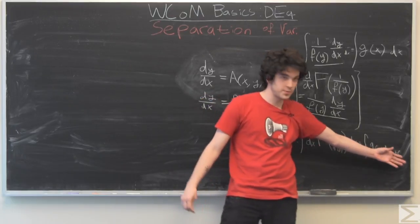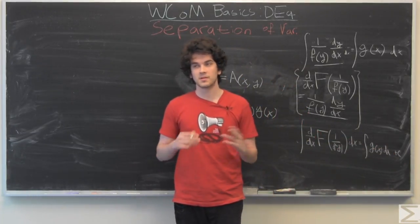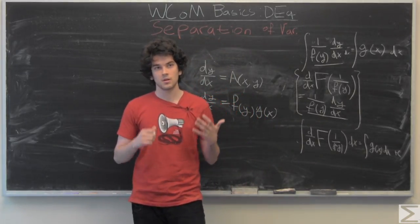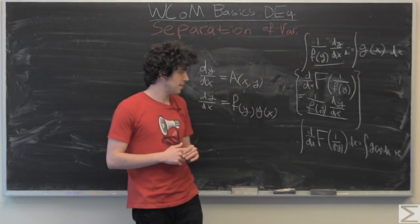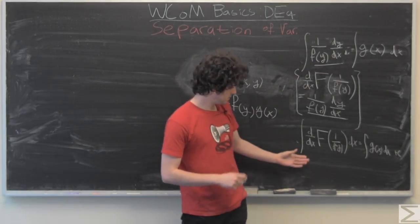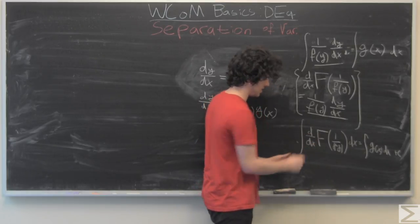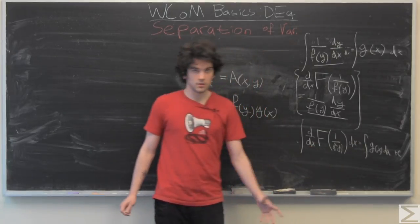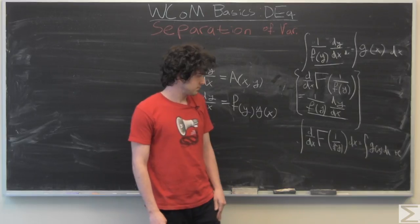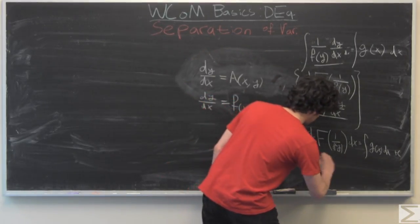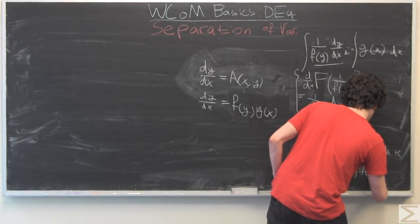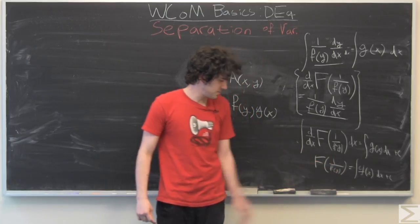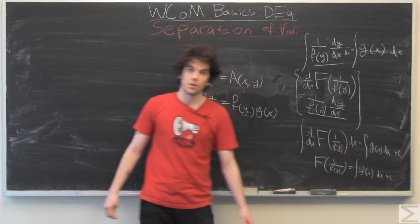And one thing I've done here is added a preemptive plus c, because it's very important to not forget about the c, the constant, because that will absolutely ruin the final answer that you get. So you also will notice that the derivative that we're taking on this big function capital F cancels out with the integral that we're also taking. So what we have is the antiderivative of our function, 1 over f of y is equal to g of x dx plus c.